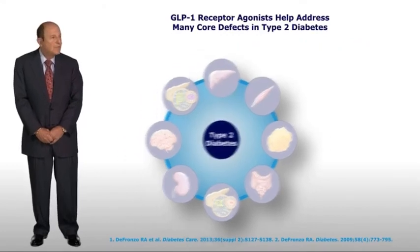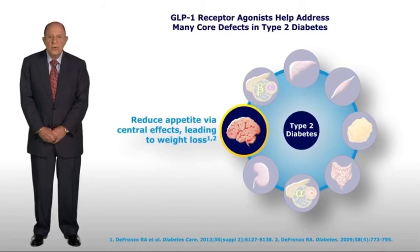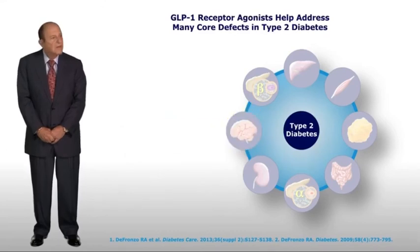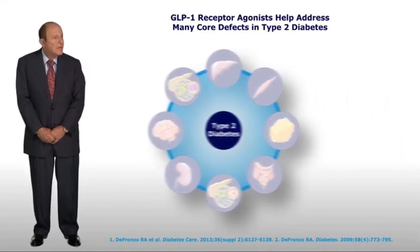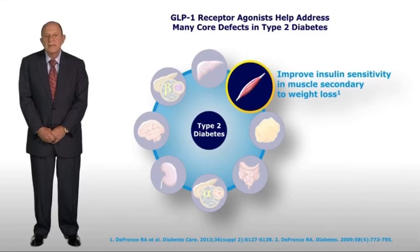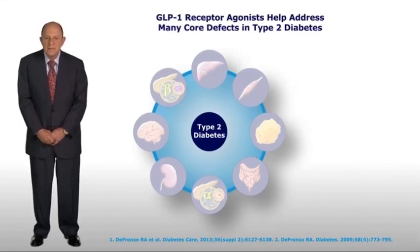Fifth, GLP-1 receptor agonists work centrally to inhibit appetite and food intake, leading to weight loss. Sixth, by causing weight loss, GLP-1 receptor agonists have the ability to improve insulin sensitivity in muscle.